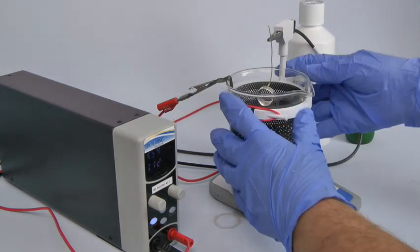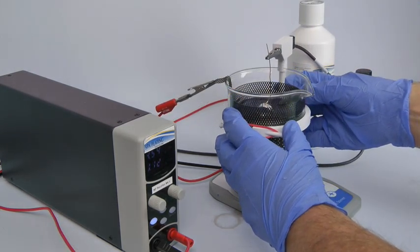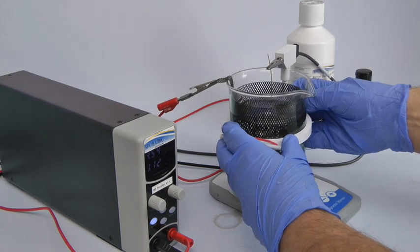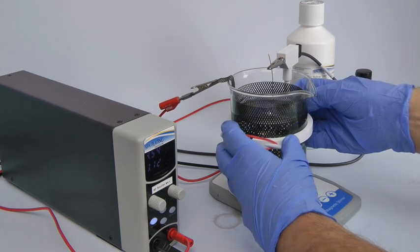After gripping your piece of jigging wire in the crocodile clip, gently slide the jig holder down the beaker until the work is suspended in the plating solution.